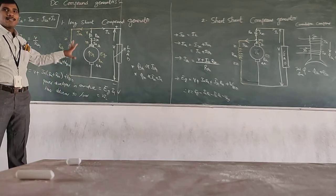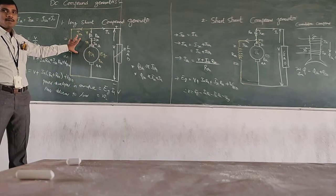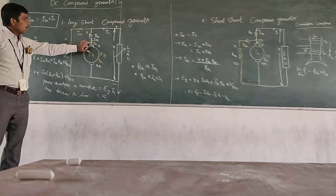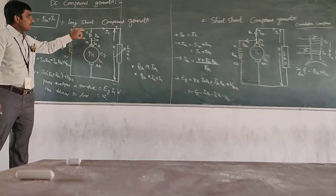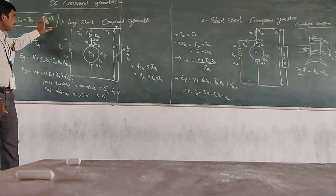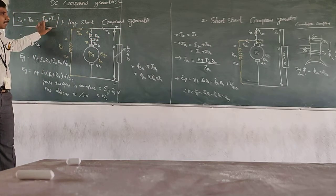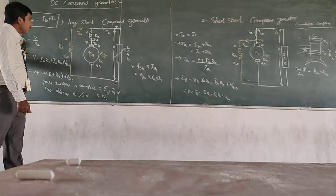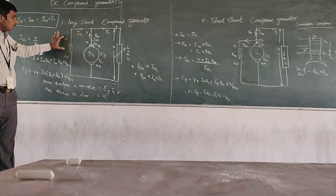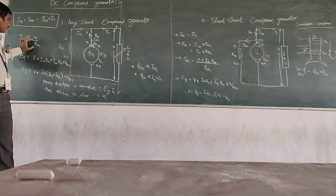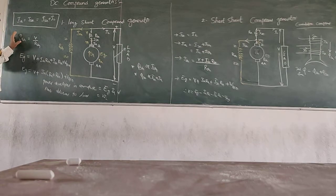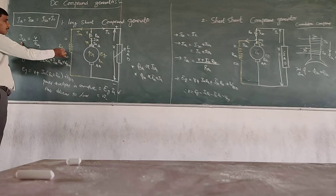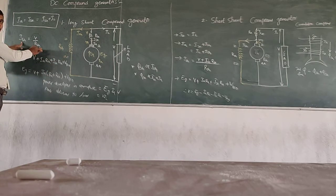Now, what are the voltage and current relationships for the long shunt compound generator? From this: IL equals Ish plus Ia. That is one current equation for the long shunt compound generator. Next, Ish equals V divided by Rsh — that is, current through the shunt field winding equals voltage across shunt field winding divided by its resistance.